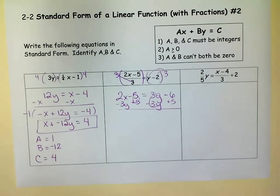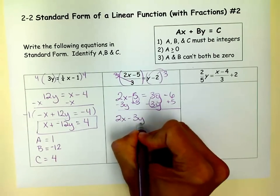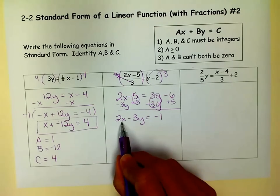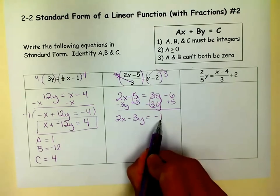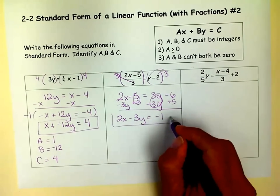Those zero out. And 2x minus 3y is 2x minus 3y. Negative 6 plus 5 is negative 1. x and y are on the same side. Constant on the right. This is positive. So this is standard form.